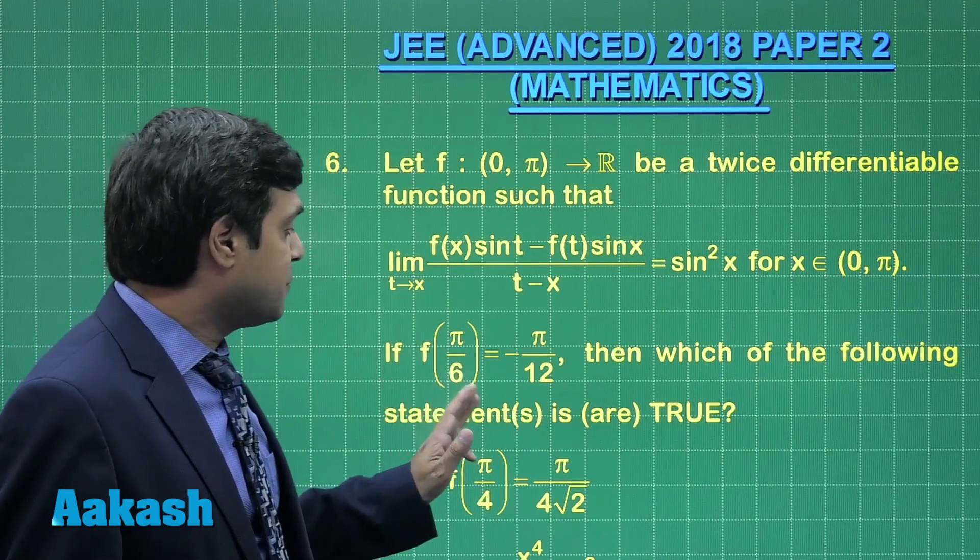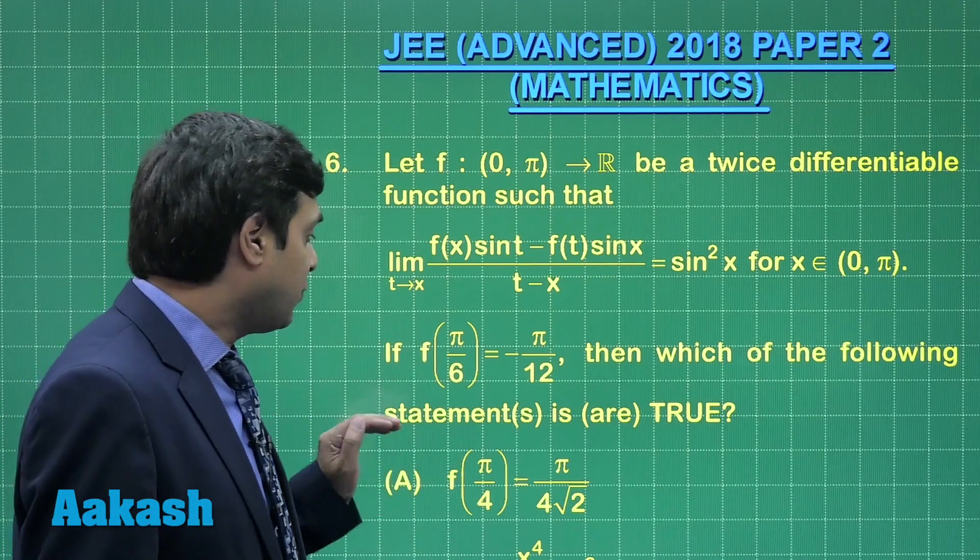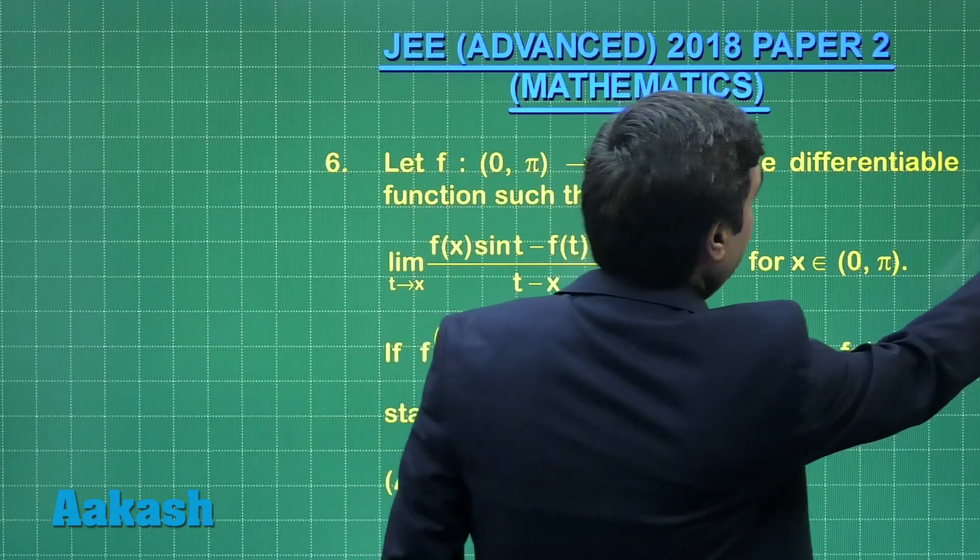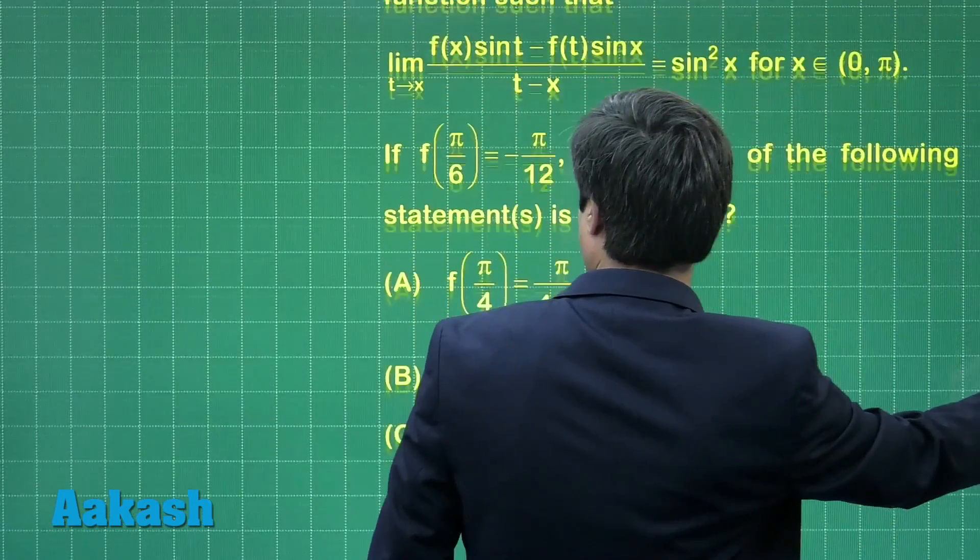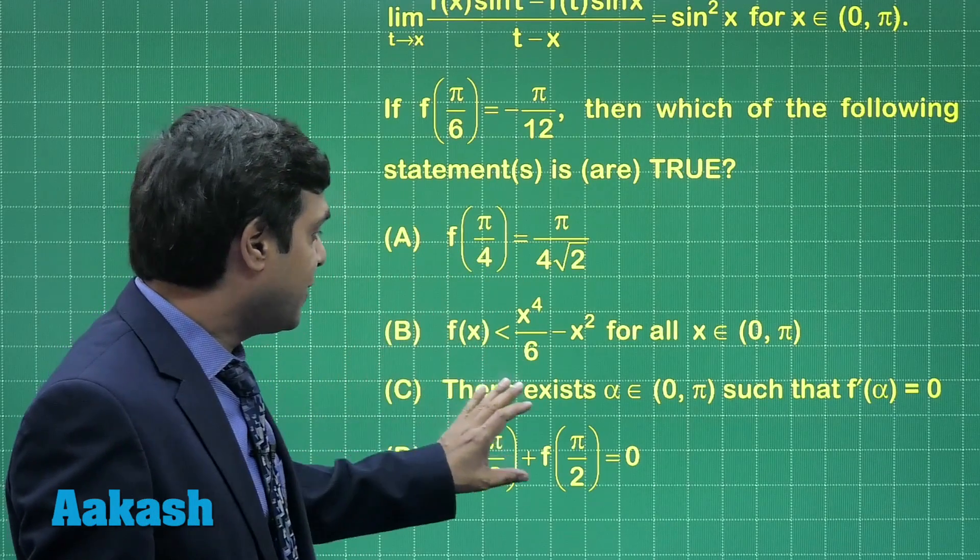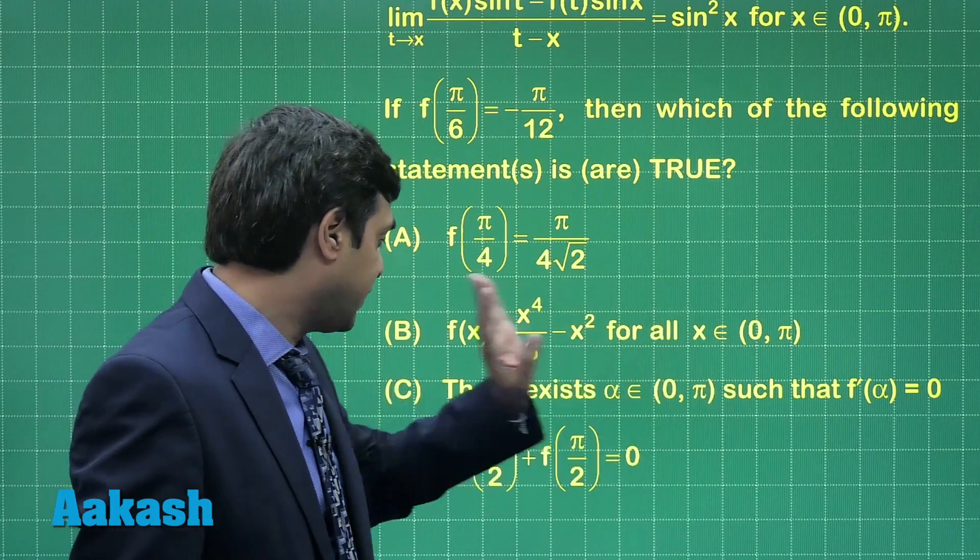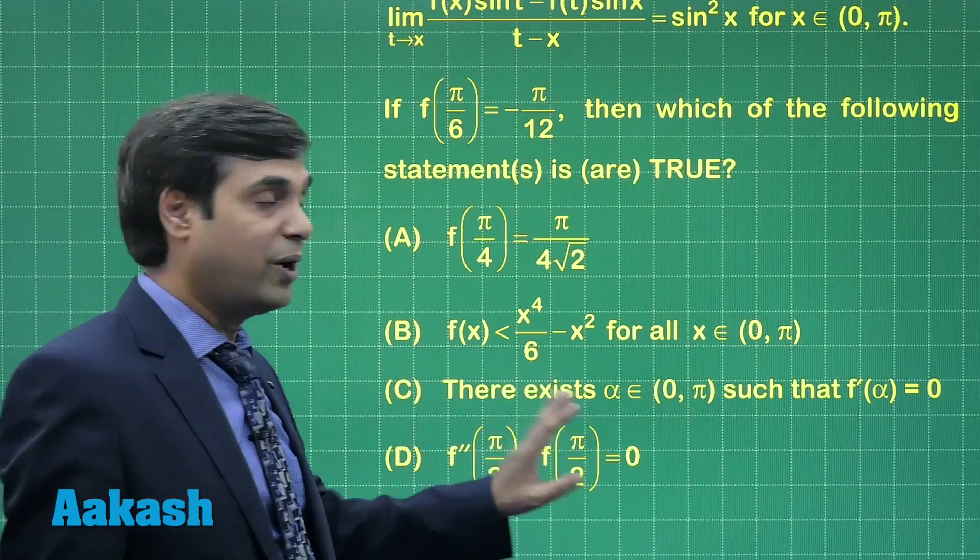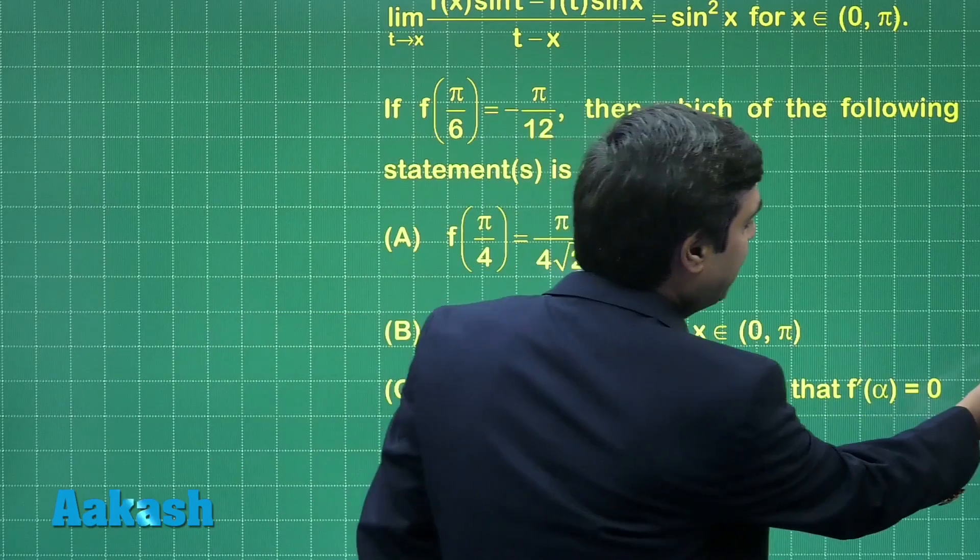If f(π/6) = -π/12, then which of the following statements are true? The options are about f(π/4), some inequality, there exists some α such that f'(α) = 0, and the second derivative of f at π/2 as well as the value. First we need to find the function.